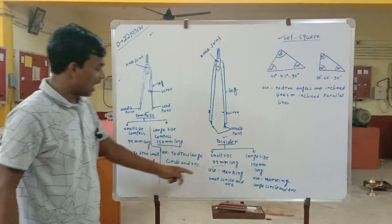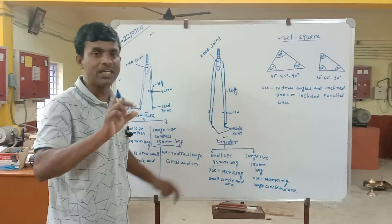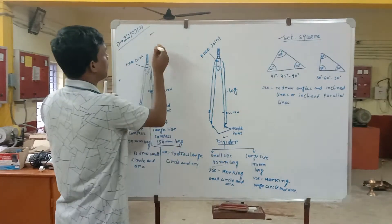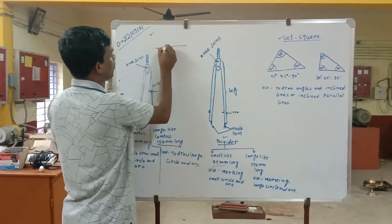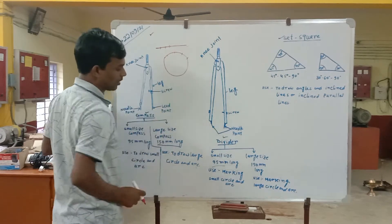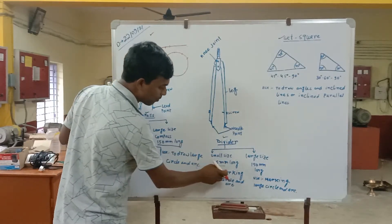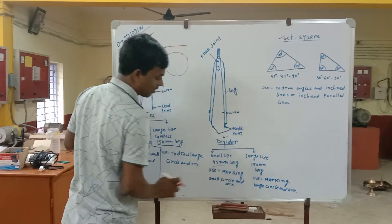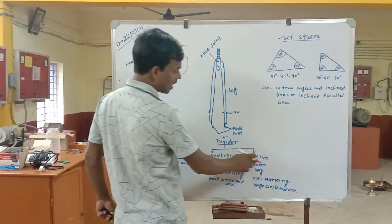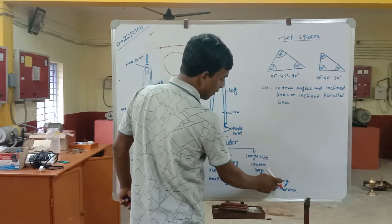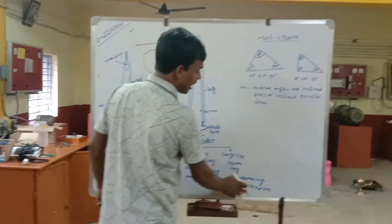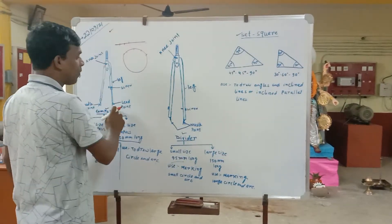The divider is used to mark measurements — you divide a line and mark it. The divider acts as a point-to-point measuring tool. The small size divider is used for marking small circles and arcs, while the large size divider is used for marking large circles and arcs.